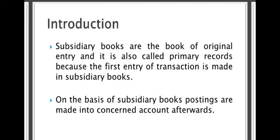Coming to the introduction, subsidiary books are the book of original entry and are also called primary records, because the first entry of a transaction is made in subsidiary books. On the basis of subsidiary books, postings are made into the concerned account afterwards — that is the secondary books. After recording journal entries or transactions in primary books, those same entries will be recorded in the secondary books, which are called ledgers.